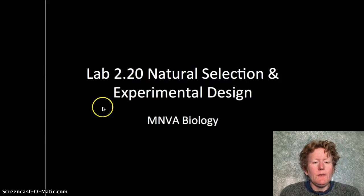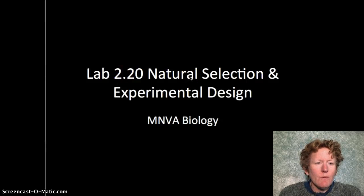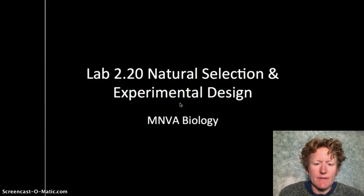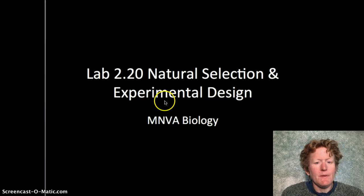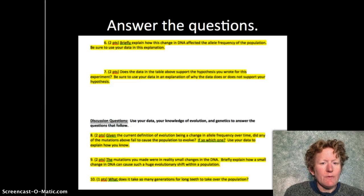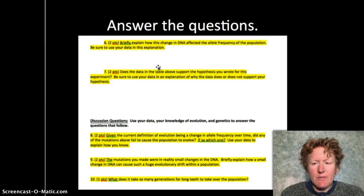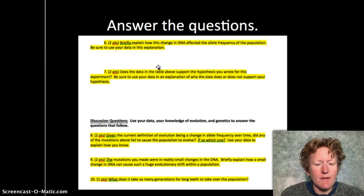Hello biologists! We are going to continue to work on Lab 2.20 on natural selection and experimental design. Remember we're working on experimental design so we can practice for the Minnesota State Science Test. You should have viewed part one before starting part two. In part one we got through filling out the two data tables, and now we're going to start to answer the questions in the lab. Remember the lab sheet you should get from doc sharing, and we're working on a FET simulation on natural selection.